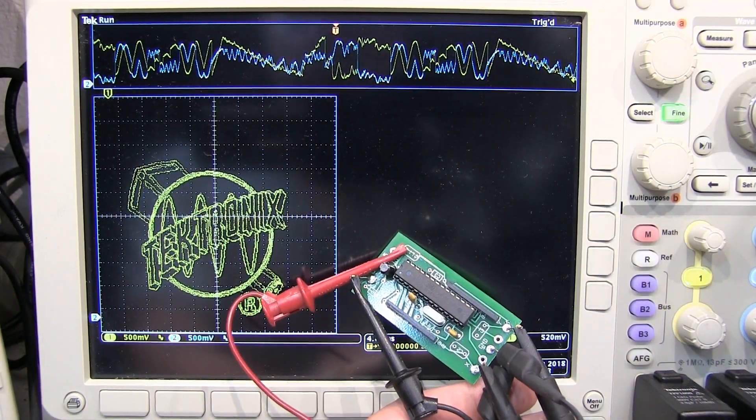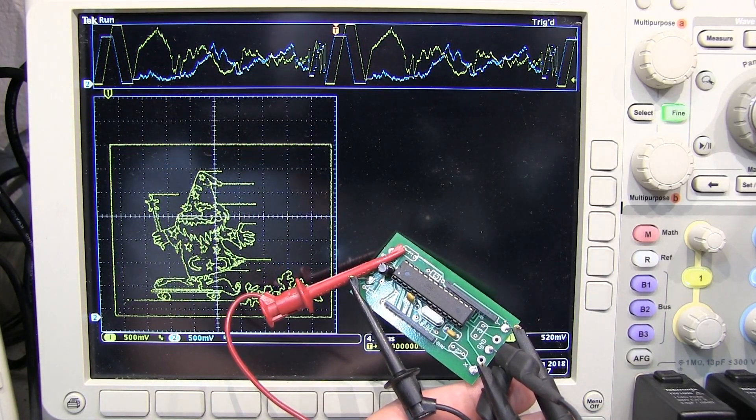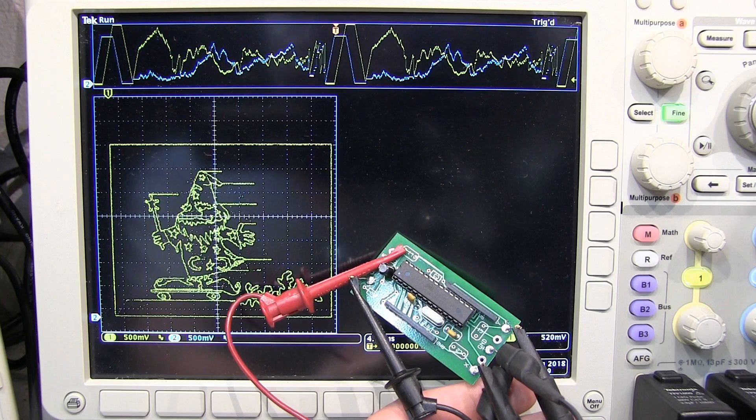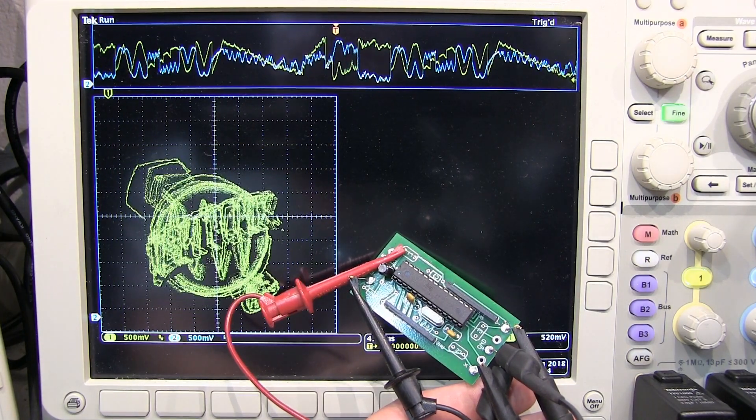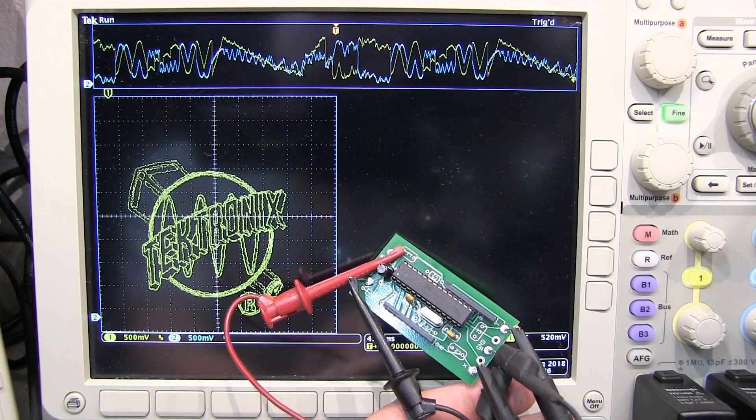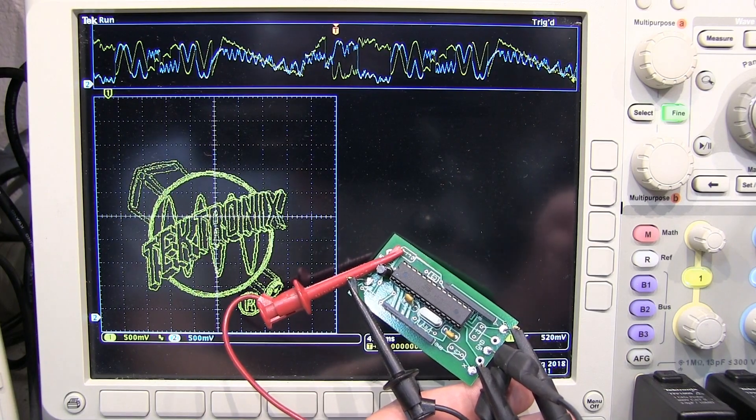Just a fun little video showing the differences in XY operation of an analog scope versus a digital scope. The analog CRT-based scopes generally do a better job with XY because that's how those CRTs are normally driven. The digital scopes have got to do some fancy processing to get there. So anyway, I hope you enjoyed the video.